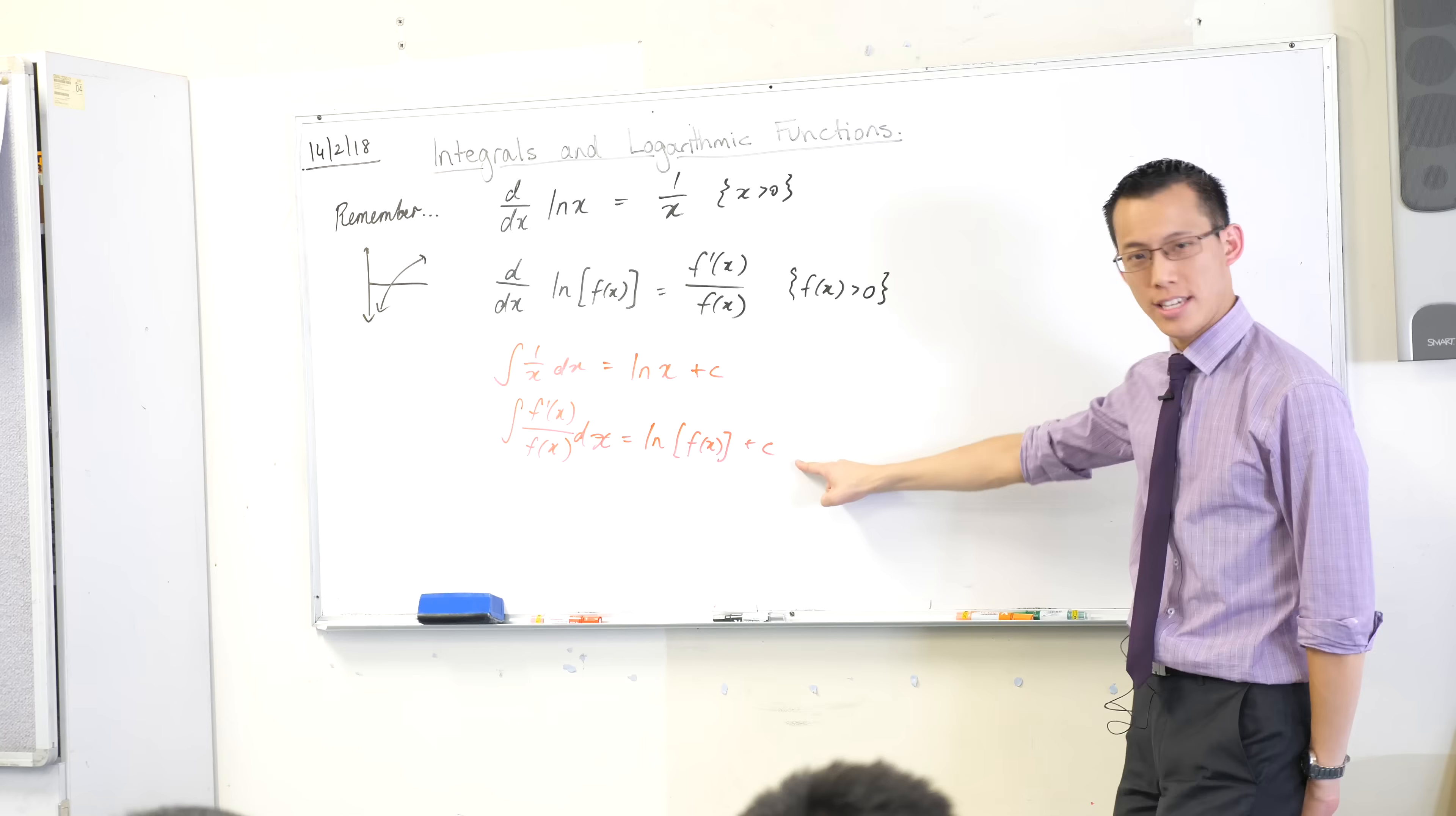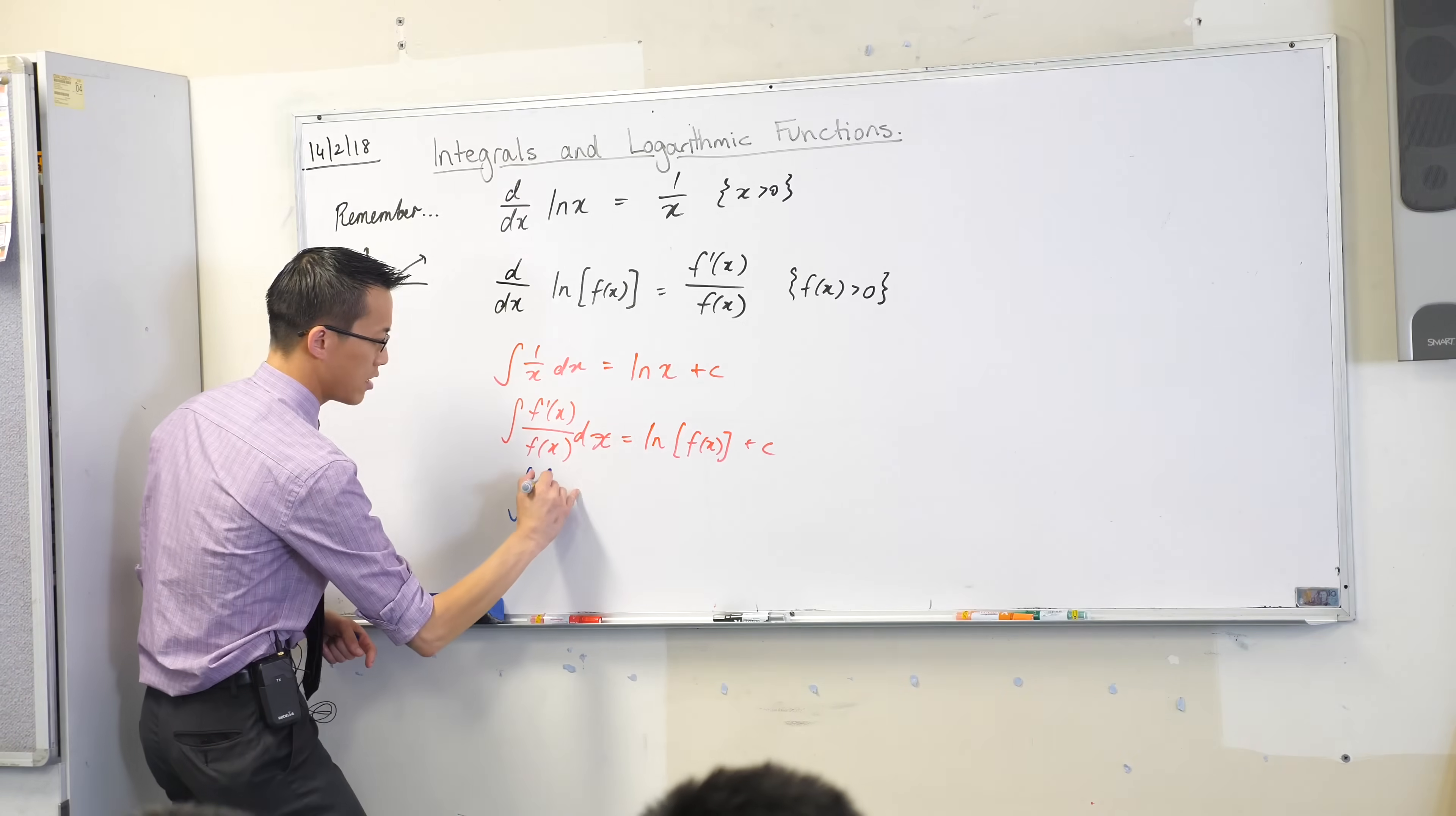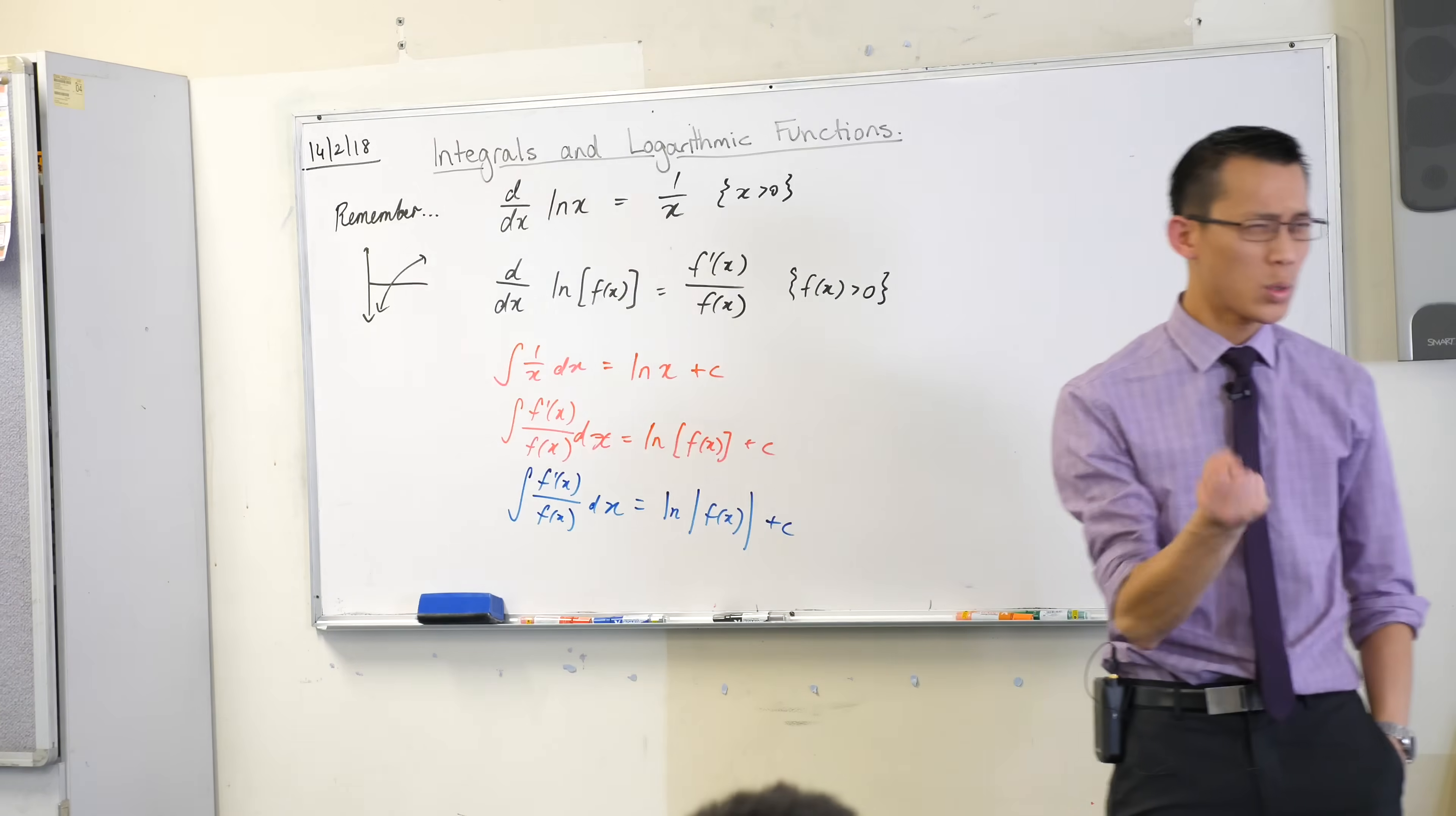It looks like it's this one, doesn't it? It looks ever so suspiciously like it's this one, except it's not. What's different? Underneath this, would you please write for me? The integral, this is what's on the reference sheet, the integral of f prime on f is in fact equal to the log of the absolute value of this. Okay, now, this leads to a question. What's going on here?